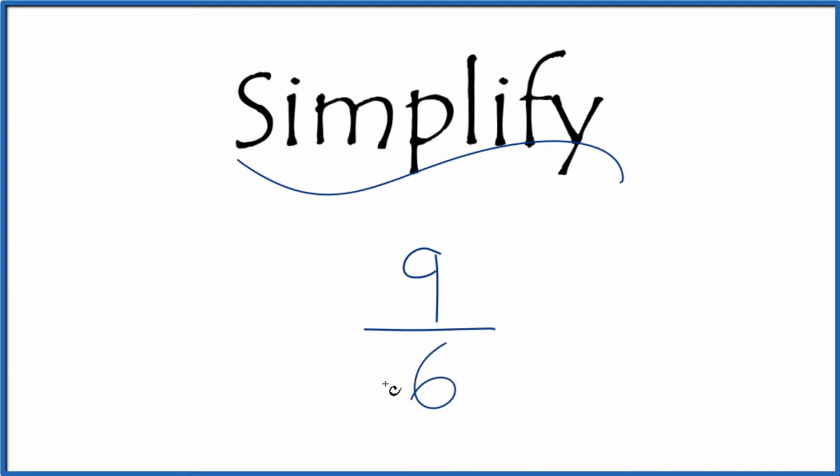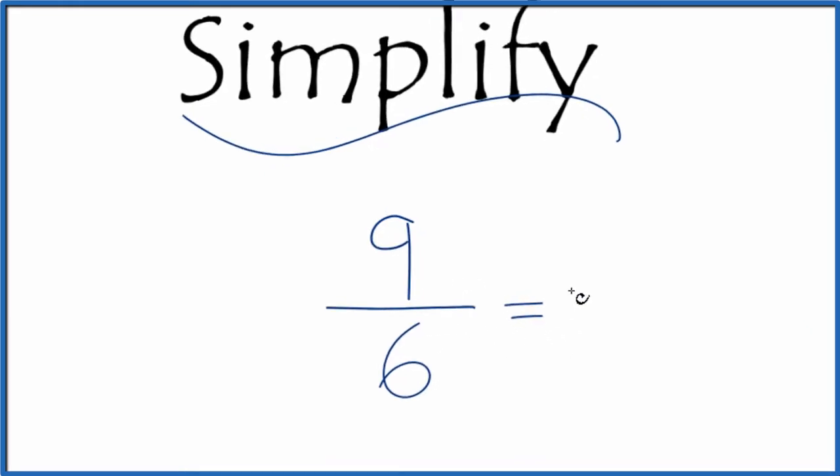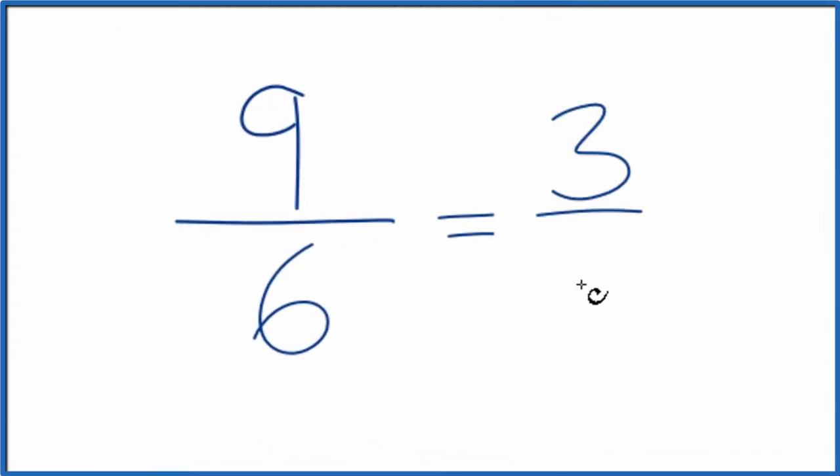So let's reduce this to another fraction that has an equal value. It's just in lowest terms. I know that 9 and 6, 3 times 3 is 9, and 3 times 2 is 6. So I could divide 9 by 3, I get 3, 6 by 3, I get 2, and end up with 3 over 2.